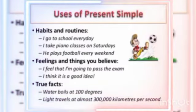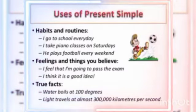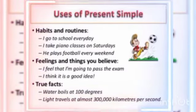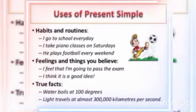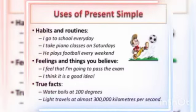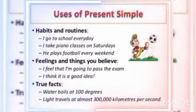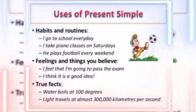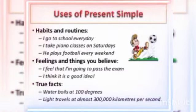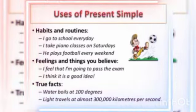And most importantly, simple present tense talks about true facts and universal truths — something which cannot be changed. Like, water boils at 100 degrees — you cannot boil it less than that, so it is a universal truth. Light travels at almost 300,000 km per second — this is also a universal truth. You cannot change it, that's why we use the first form of the verb 'travels'.